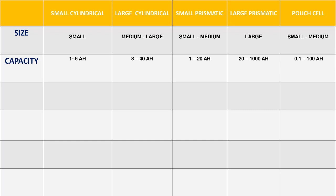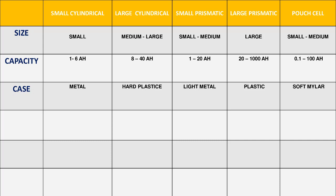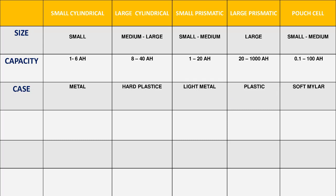Now let's see the casing used for these different types of cells. For the small cylindrical cell, we use metal casing. For the large cylindrical cell, we use hard plastic. For the small prismatic cell, we use light metal. For the large prismatic cells, we use plastic for casing. And for the pouch cell, we use soft mylar for the casing.